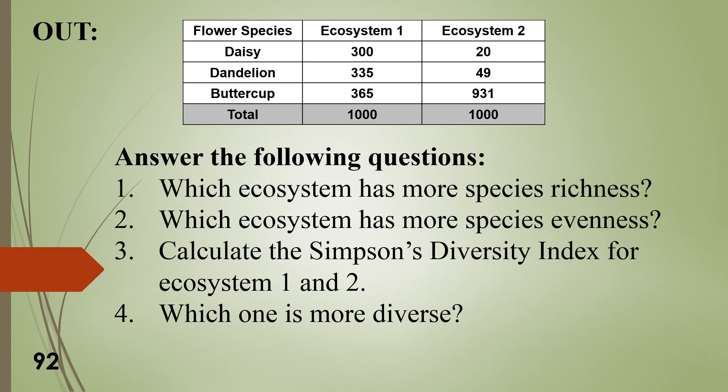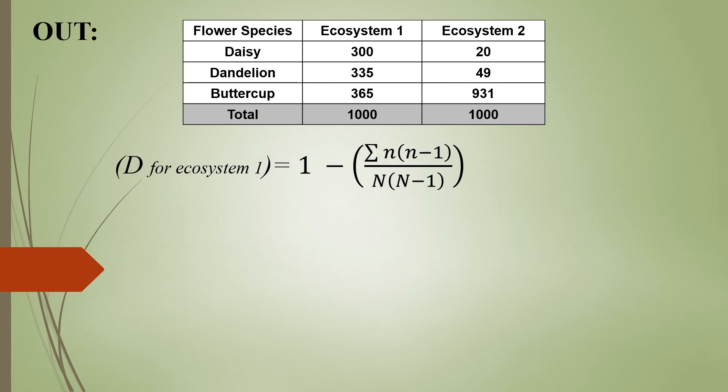Today, for your out, you were asked to identify which ecosystem had more richness, more evenness, to calculate the Simpson's Diversity Index, and to tell me which one was more diverse based on that index. Right now, you are just going to be calculating the Simpson's Diversity Index for both Ecosystem 1 and 2. To do this, you are going to be using the Simpson's Diversity Index equation.